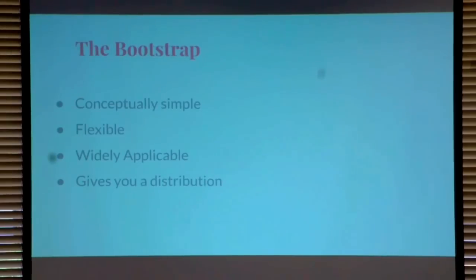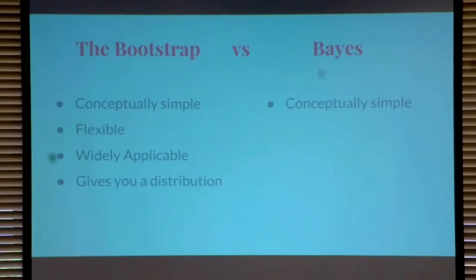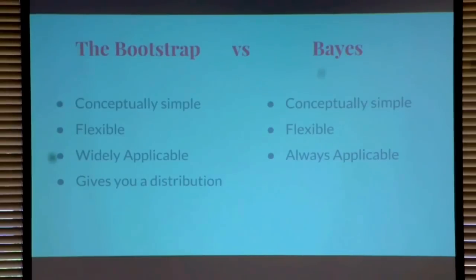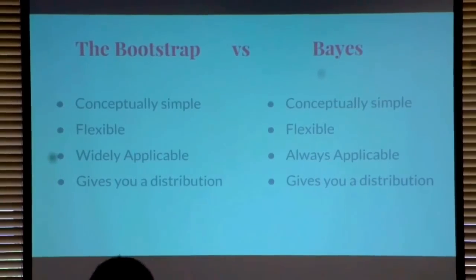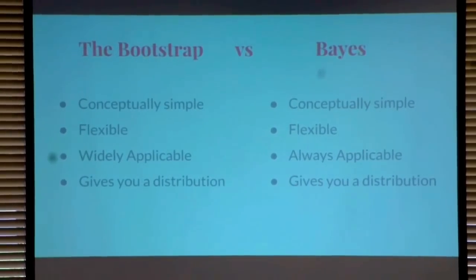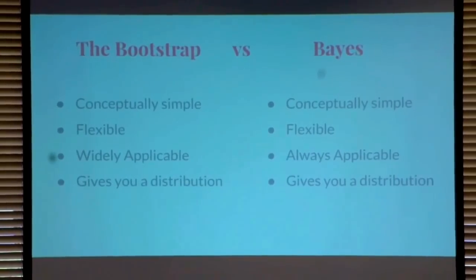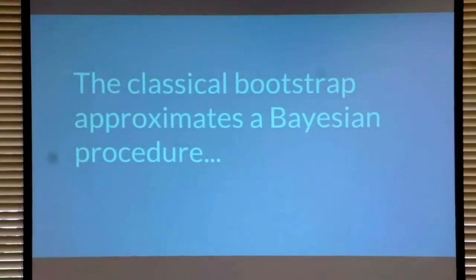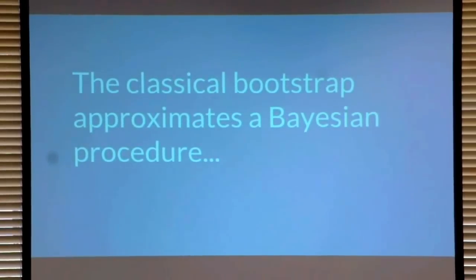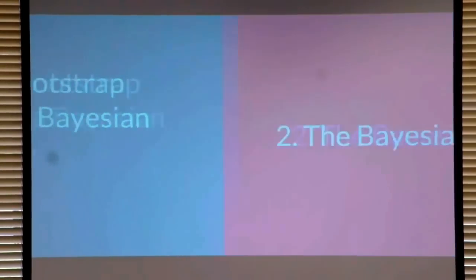When I look at this list, I'm reminded of some of the good things with Bayesian statistics. Bayesian statistics is conceptually simple — it's just probability theory — and it's extremely flexible, you can use it to fit basically any type of model. Since it's so flexible, it's almost always applicable. And it gives you a distribution: a probability distribution over likely parameter estimates. It's actually also the case that the classical non-parametric bootstrap approximates a Bayesian procedure, and that procedure is the Bayesian bootstrap.